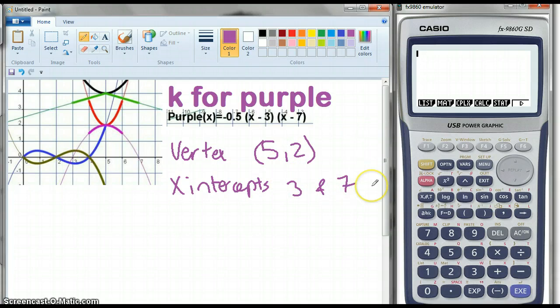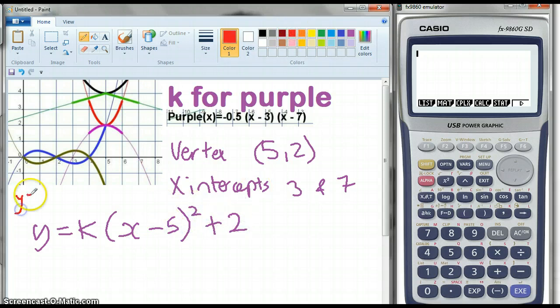The first way I'm going to use is the vertex method. So y equals k(x minus 5) squared plus 2, because I'm using my general formula of y equals k(x minus a) squared plus b, where that there is my vertex, a comma b, and k is a shape.